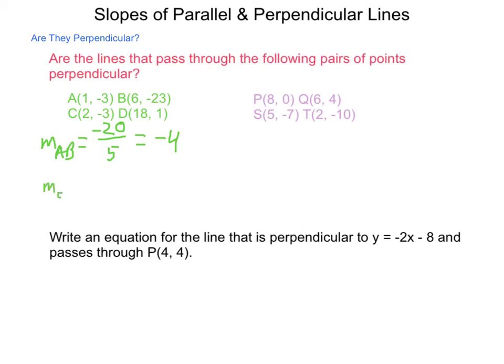Now the slope of CD is going to be equal to our rise from negative 3 to positive 1 is 4, and our run from 2 to 18 is 16. Simplifying that fraction we get a positive 1/4. We started with negative 4 over 1 and our next is positive 1 over 4. They are opposites and reciprocals, so yes, these form perpendicular lines.